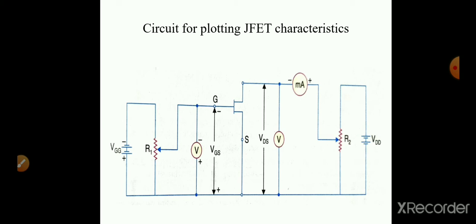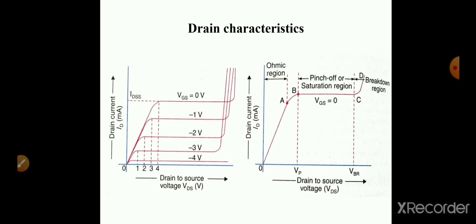This is the circuit arrangement for plotting the JFET characteristics. The JFET is arranged in common source configuration, meaning the source is common to both input and output. Input is given across the gate-source terminal and output is taken from the drain-source terminal. A voltmeter is connected in parallel across the gate-source terminal to measure VGS, and another voltmeter across the drain-source terminal. An ammeter is connected in series with the drain terminal. Two potentiometers R1 and R2 are used to adjust gate-source voltage and drain-source voltage respectively.